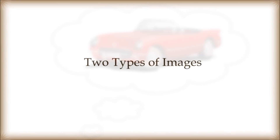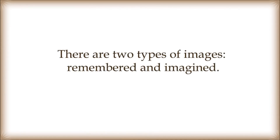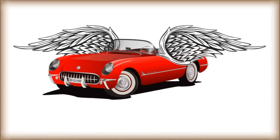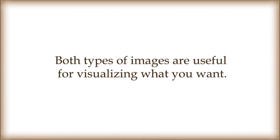There are two types of images: remembered and imagined. When you thought of your car, your mind retrieved a remembered image. Now imagine your car with wings. The image changes, this time to an imagined image. Both types of images are useful for visualizing what you want.